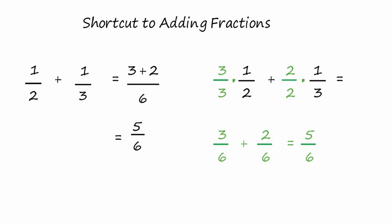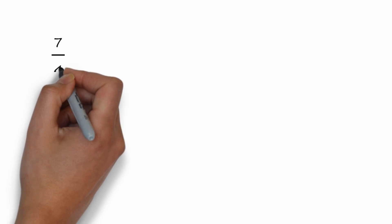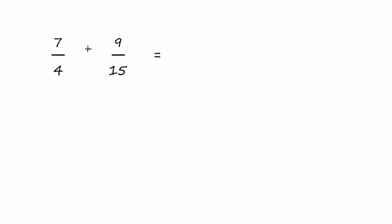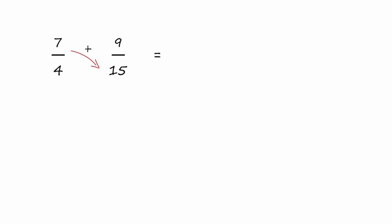Let's take another example now of the shortcut method so you can see the steps one more time. Let's take seven-fourths plus nine-fifteenths and add them up. Upper left times lower right. Seven times fifteen is 105, right to the numerator.